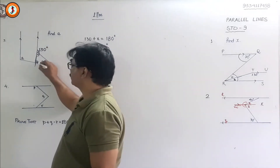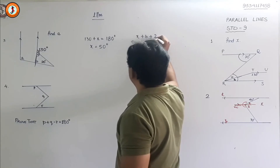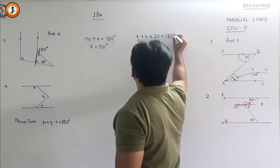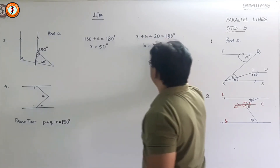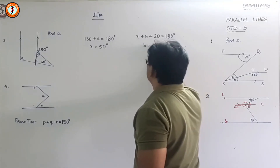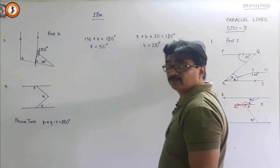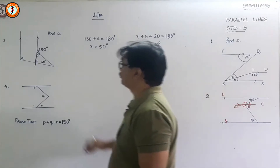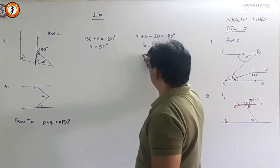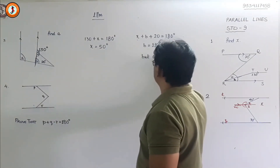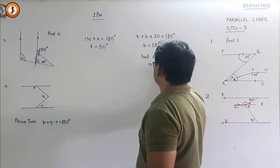In any triangle the sum of the three angles is 180, so x plus b plus 20 is equal to 180. Since x is 50, that means 50 plus 20 is 70, and b equals 180 minus 70, which is 110 degrees. Now since these two lines are parallel, a and b are corresponding angles, so a is also equal to 110 degrees.